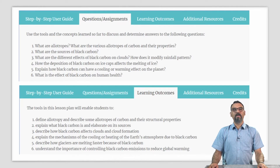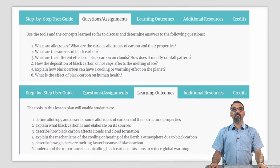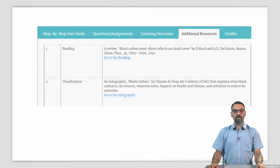Learning outcomes: The tools in this lesson plan will enable your students to: 1. Define allotropy and describe some allotropes of carbon. 2. Explain what black carbon is and elaborate its sources. 3. Describe how black carbon affects clouds and cloud formation. 4. Explain the mechanisms of the cooling or heating of the Earth's atmosphere due to black carbon. 5. Describe how glaciers are melting faster because of black carbon. 6. Understand the importance of controlling black carbon emissions in order to potentially reduce global warming. If you or your students would like to make use of further resources, these are provided in our additional resources section.